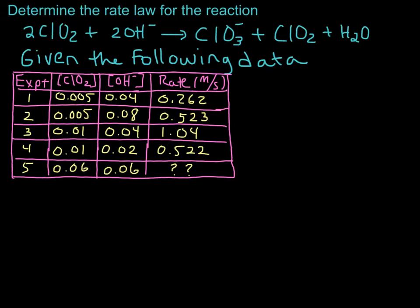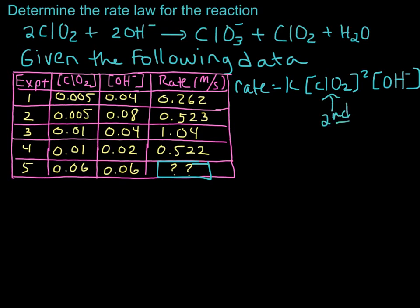And now we are going to figure out how to calculate the rate of a reaction under new conditions, so we can predict the rate of the reaction. So let's remind ourselves that the rate law for this reaction is rate equals K, concentration of chlorine dioxide squared, concentration of hydroxide to the first power. So this reaction is second order in chlorine dioxide, and it's first order in hydroxide.